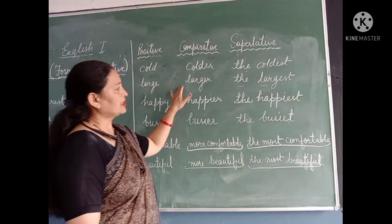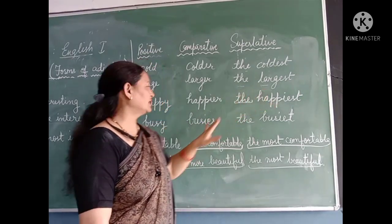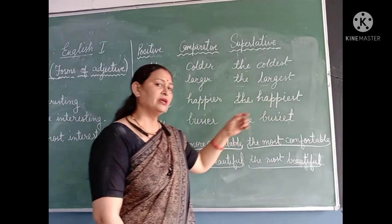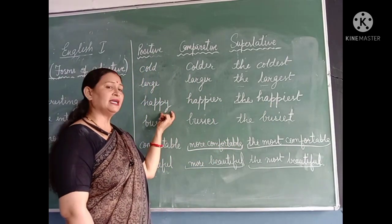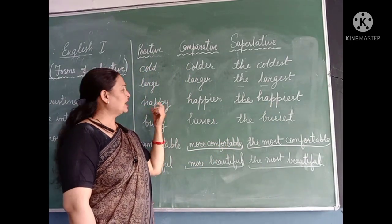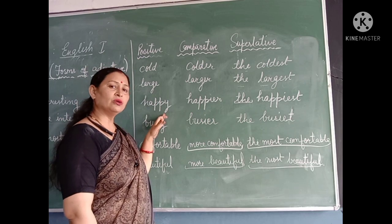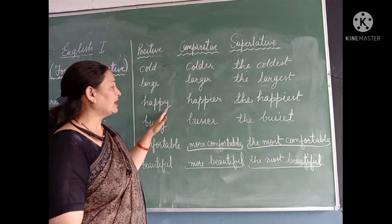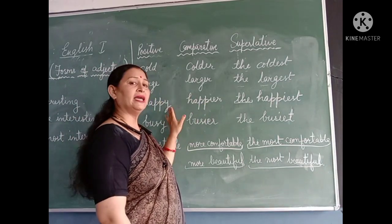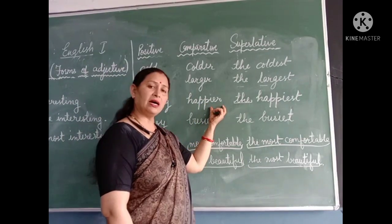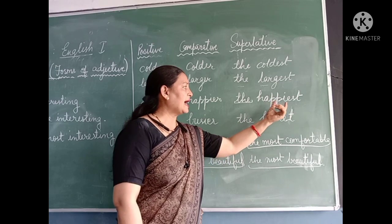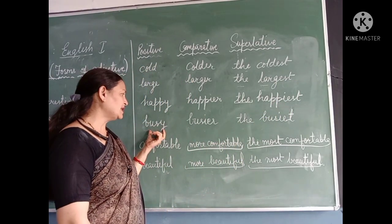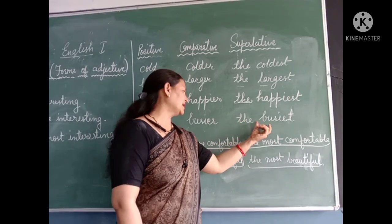For example: large, larger, the largest. Happy, happier, the happiest. Whenever a word ends in Y preceded by a consonant, we remove the Y and add IER to make it comparative, and IEST to make it superlative. For example: busy, busier, the busiest. Then: comfortable, more comfortable, the most comfortable.